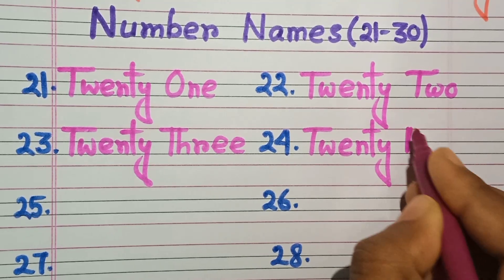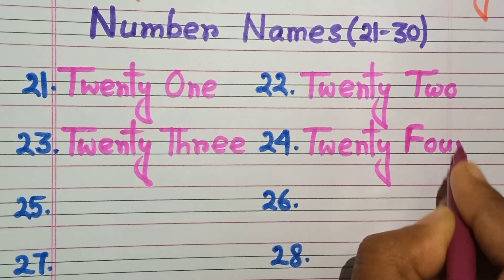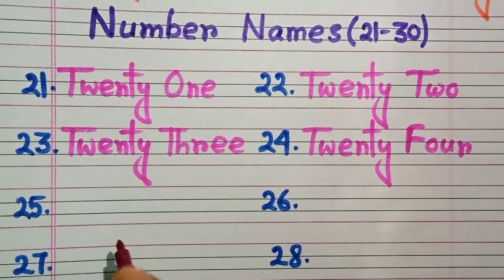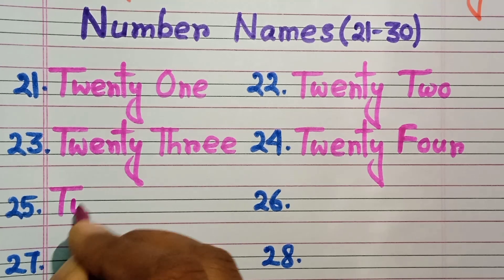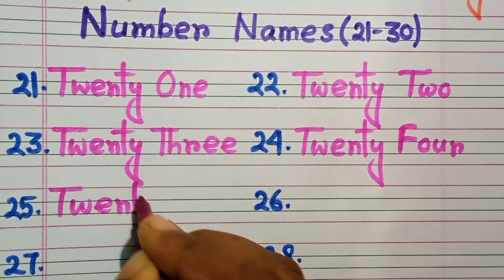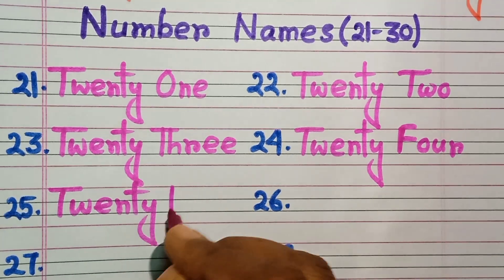Y, twenty. Four, F-O-U-R, 24. 25. Twenty-five. T-W-E-N-T-Y, twenty. Five, F-I-V-E.